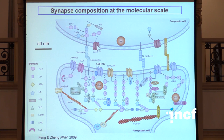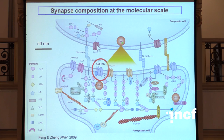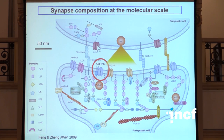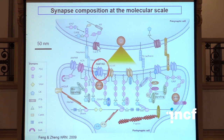One of the messages I really want to convey to you today is that actually knowing the molecules is just not enough. We really have to understand how they are localised and how they are dynamically interacting over time. One of the reasons for that is that if you look at the way glutamate is released from the presynaptic side, when a vesicle is released and releases its content in the synaptic cleft, actually there's only a subset of the area of the post-synaptic membrane that's really sensitive to that glutamate because the number of molecules of glutamate released is actually pretty low. And so knowing whether receptors are here or here actually does make a difference.